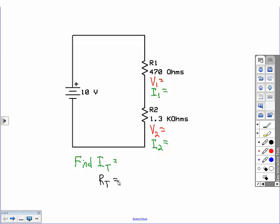With a series circuit, the total resistance is just going to be all the resistors added up together, so resistor one plus resistor two. If there were more resistors, you just add them up as well.